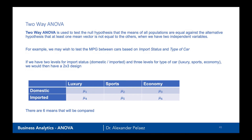Now let's talk about the two-way ANOVA. Two-way ANOVA is used to test the hypothesis that all the means of all populations are equal against an alternative hypothesis that at least one mean is different. But this time we have two independent variables, not one. Using an example, let's say we want to test the miles per gallon of the cars based on import status and the type of car.